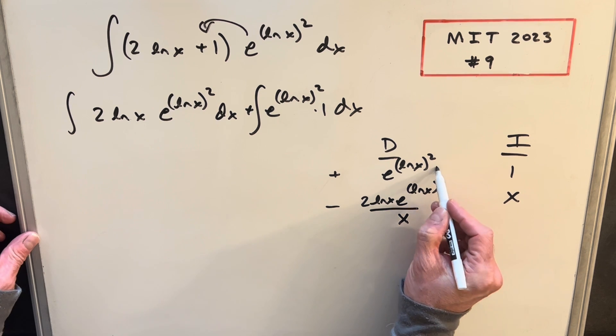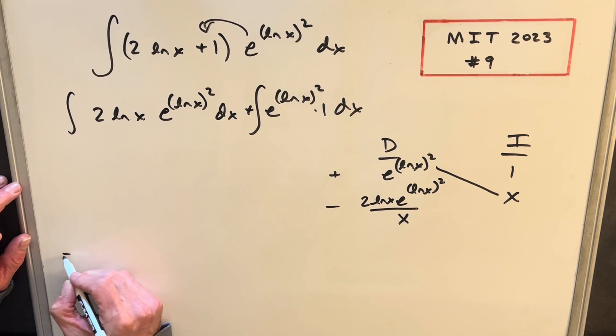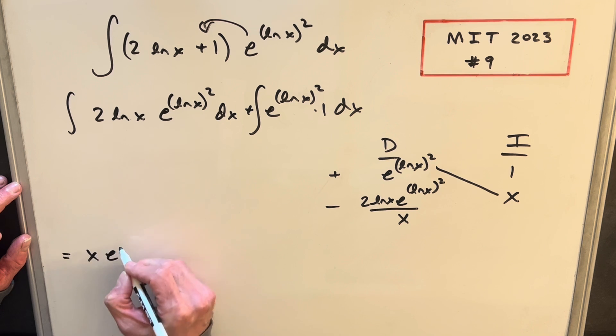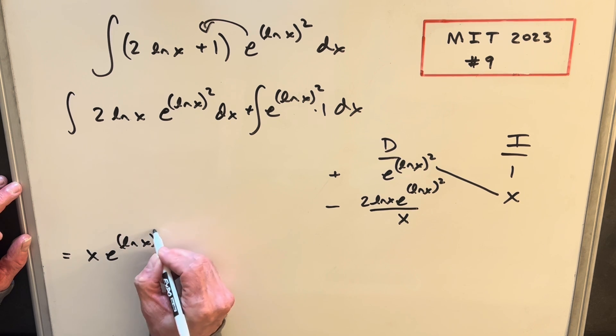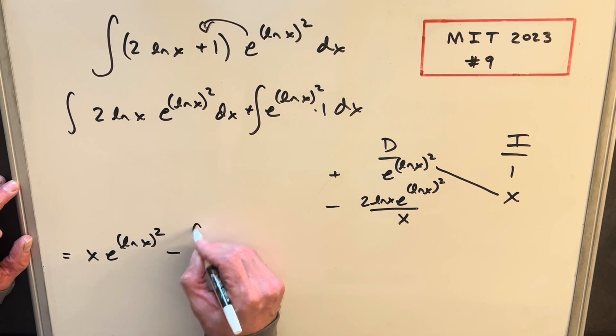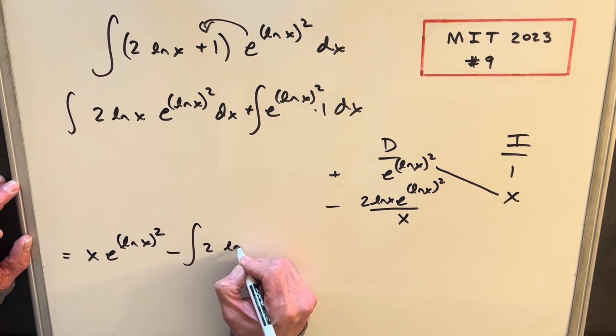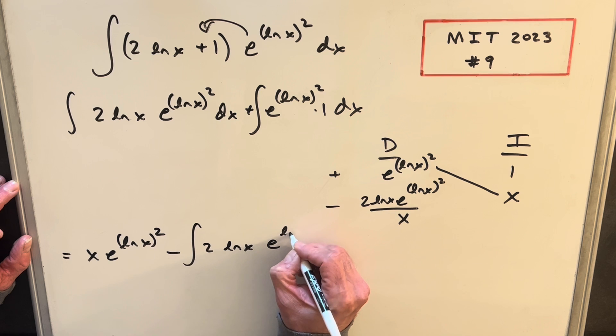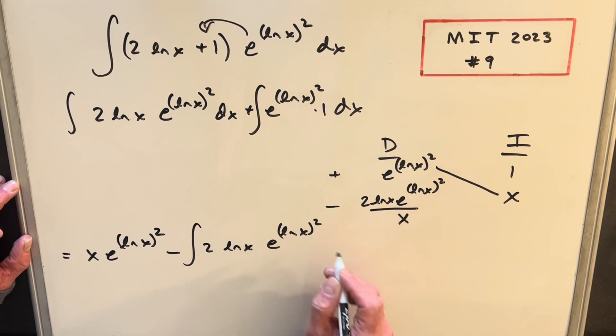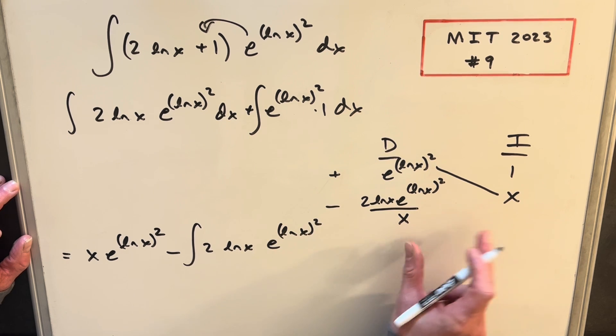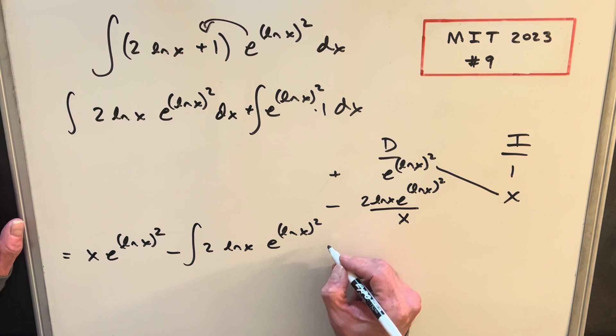All right, so then now let's look at what we've done. So the diagonal is going to be part of our answer. So we know this part. We're going to have x e ln(x) squared. Okay, so for this row being an integral, we're going to have minus the integral of 2 ln(x) e ln(x) squared. But these x's are going to cancel, so I'm just going to leave that off, because that's one. We'll have a dx.